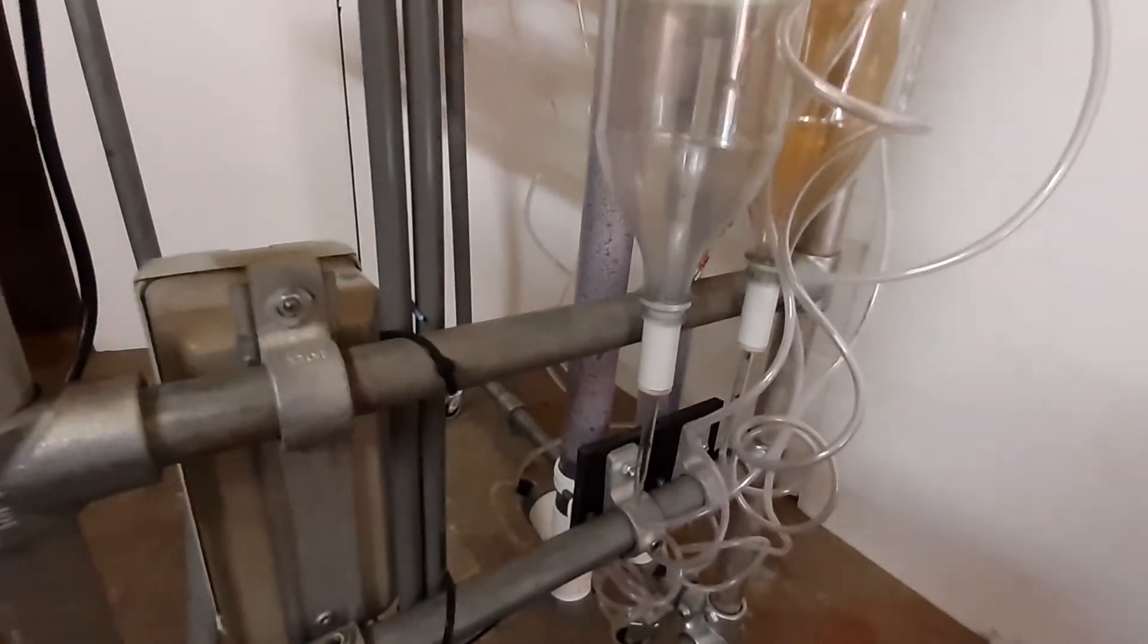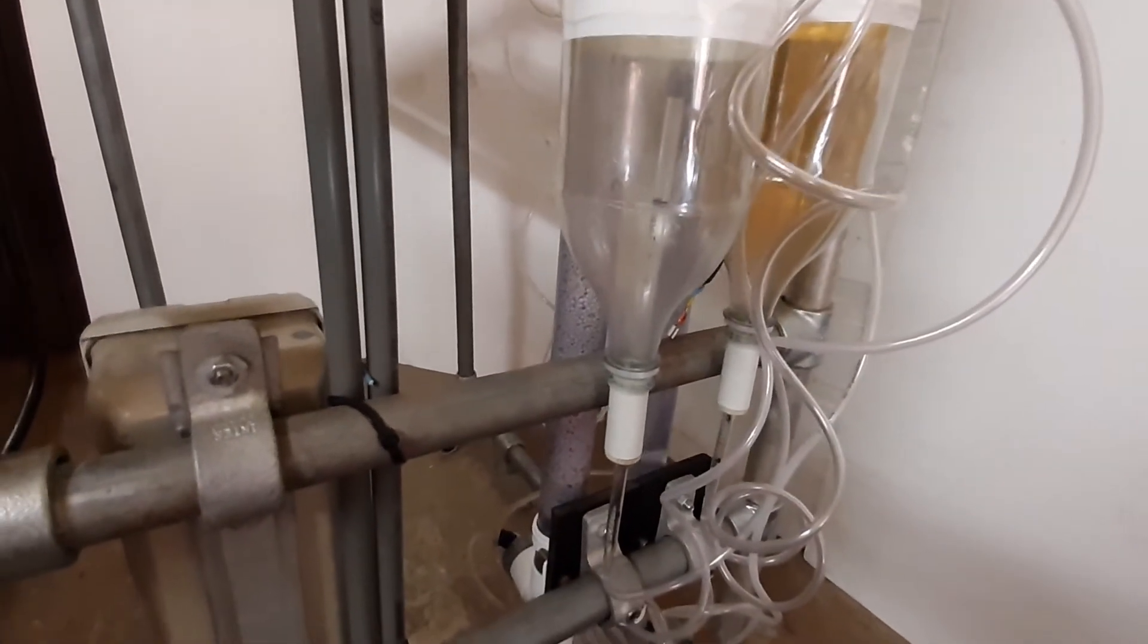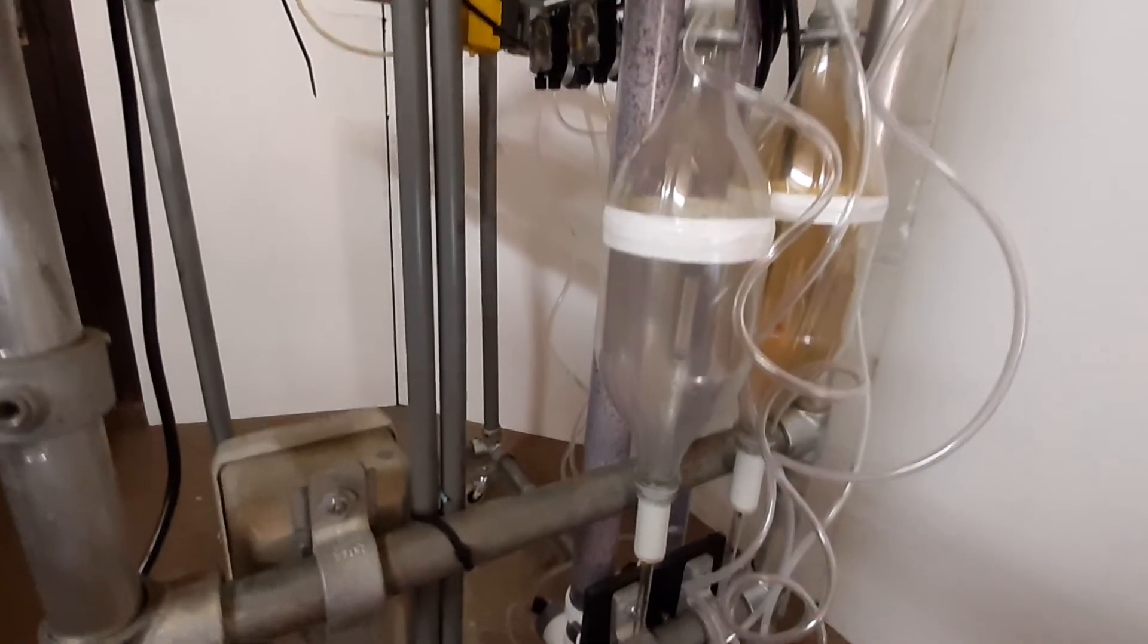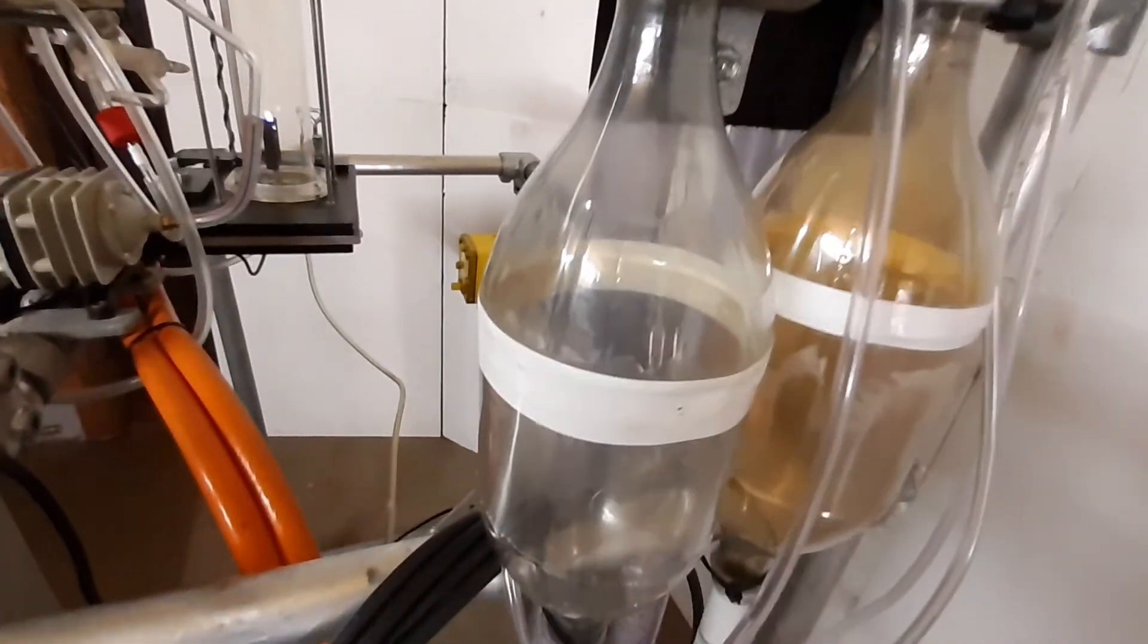As it leaves the oxidation chamber, it goes into the first scrubber which is on the backside there. As it leaves the first scrubber, it goes to the second oxidation chamber, just this one. As you can see, there is hardly any color, so it's probably not necessary to add another one.